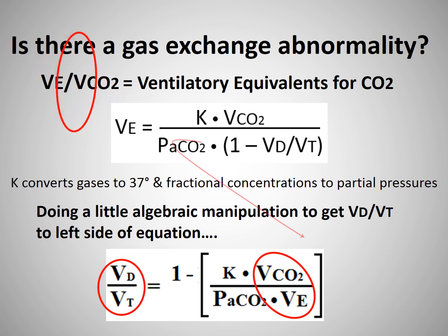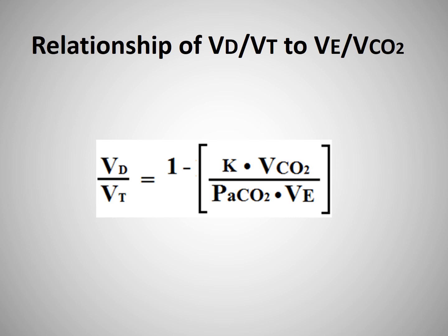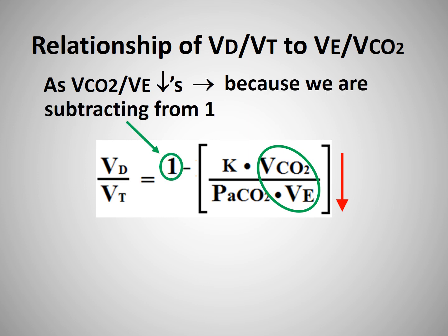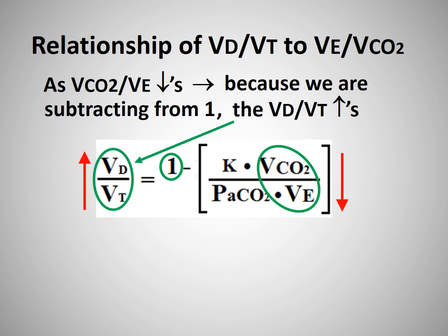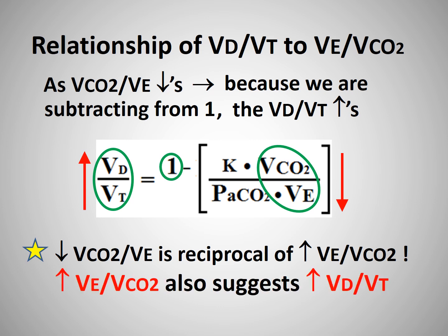Notice that this ratio contains the same variables as the ventilatory equivalence for CO2 shown above — only they are inverted. Based on this equation, as the VCO2 to VE ratio decreases, because we are subtracting it from 1, the VD to VT ratio increases. The key concept here is that since a decreasing VCO2 to VE ratio is just the reciprocal of the VE to VCO2 ratio, that means an increasing VE to VCO2 ratio means the VD to VT ratio also increases.